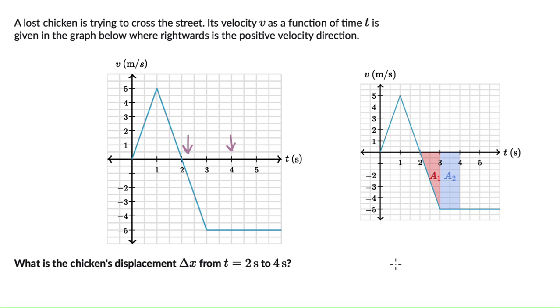Now if we find the addition of these two, A1 plus A2, that will give us the displacement of the chicken from t equals 2 to t equals 4 seconds.